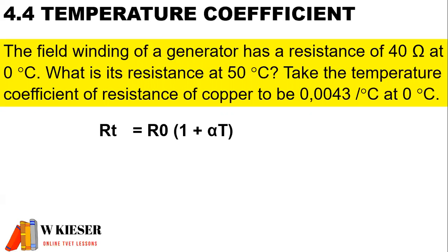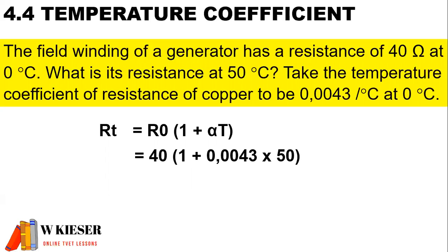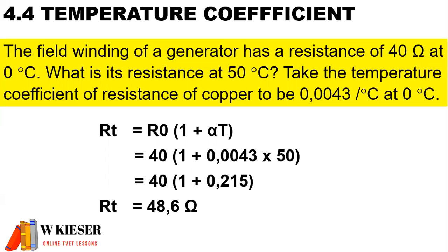Therefore, this is the formula we're going to be using. If we substitute all the values, the original resistance is 40 ohms. Inside the brackets we have 1, plus the temperature coefficient of 0.0043, multiplied by the final temperature of 50 degrees Celsius. Therefore, the resistance total is 48.6 ohms.